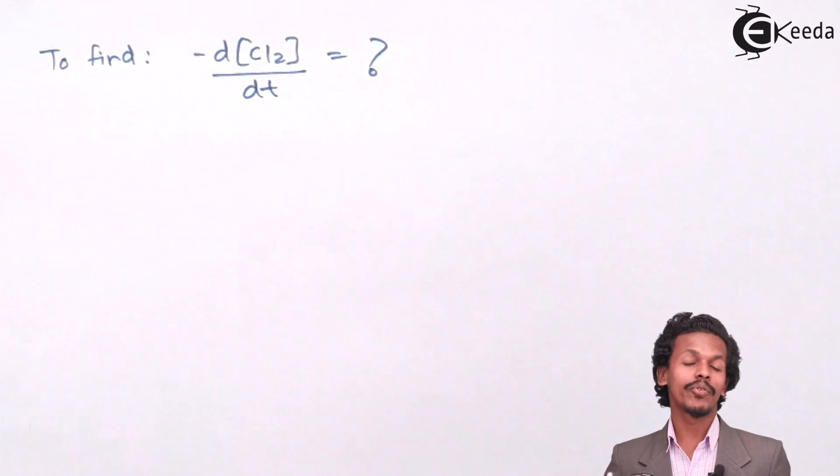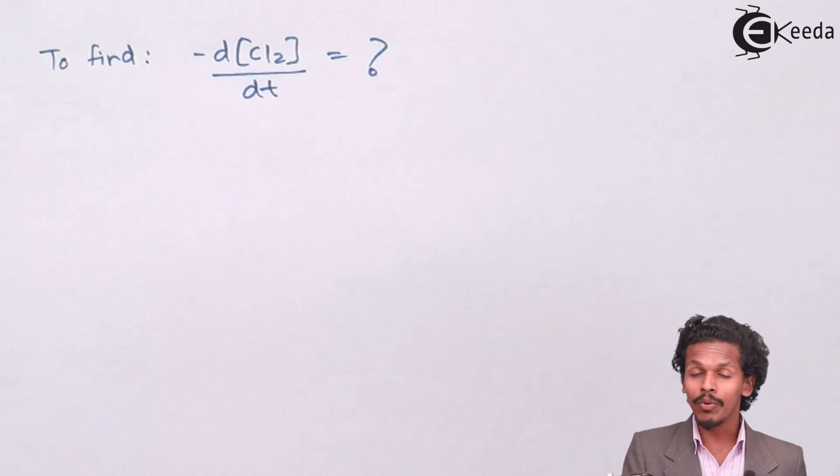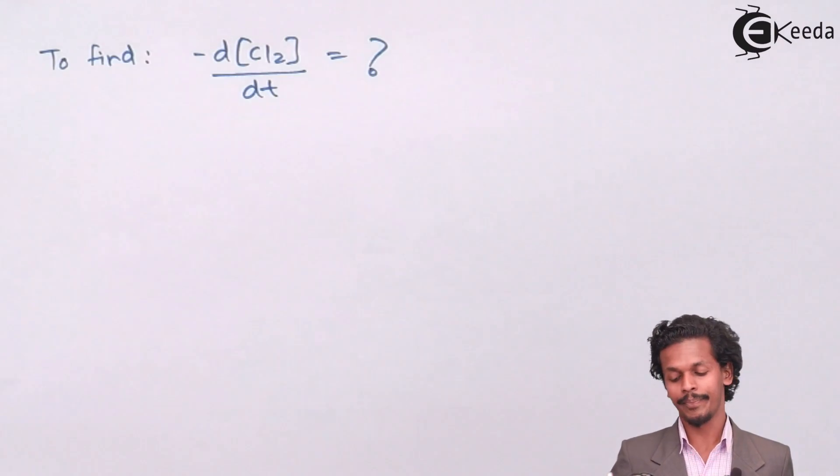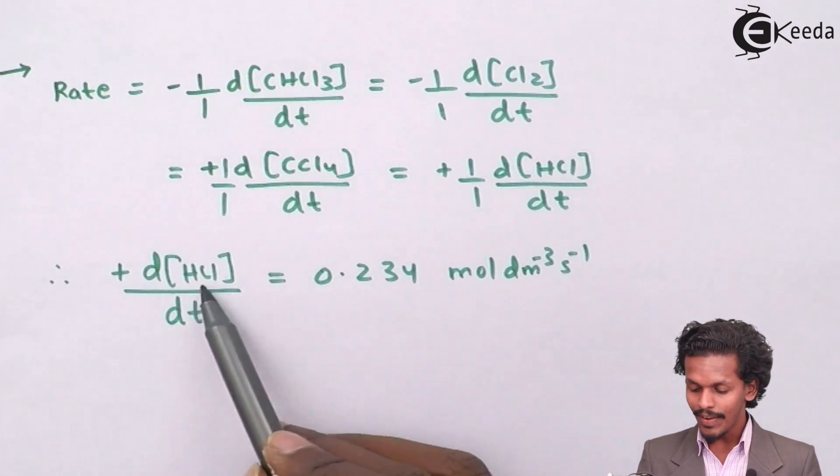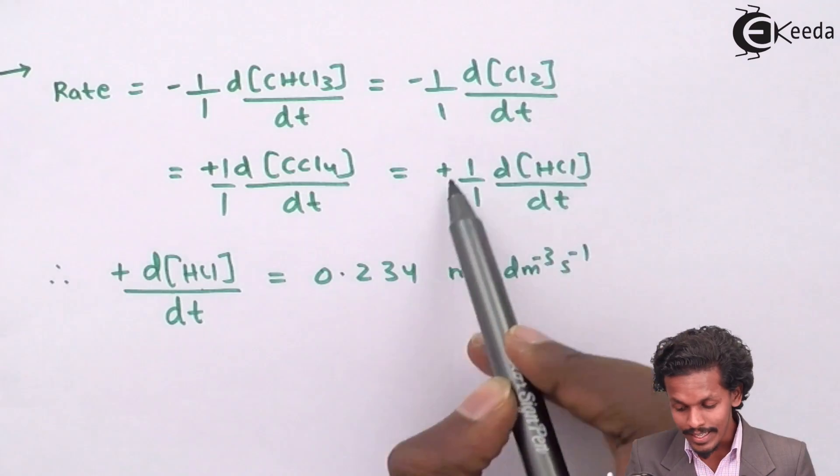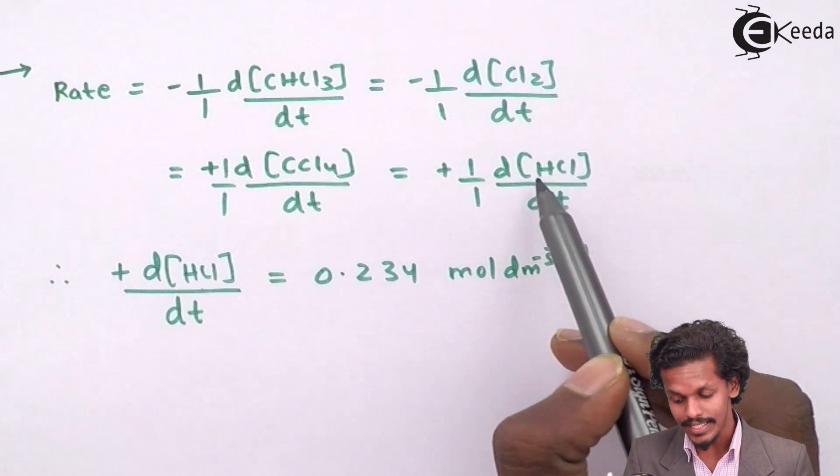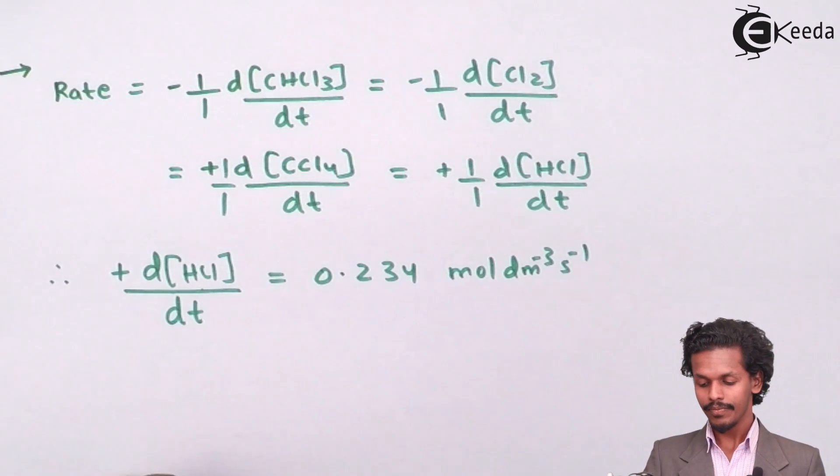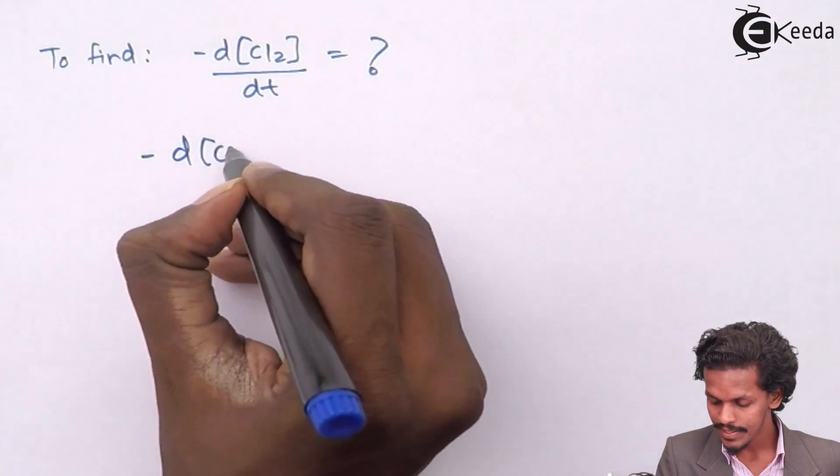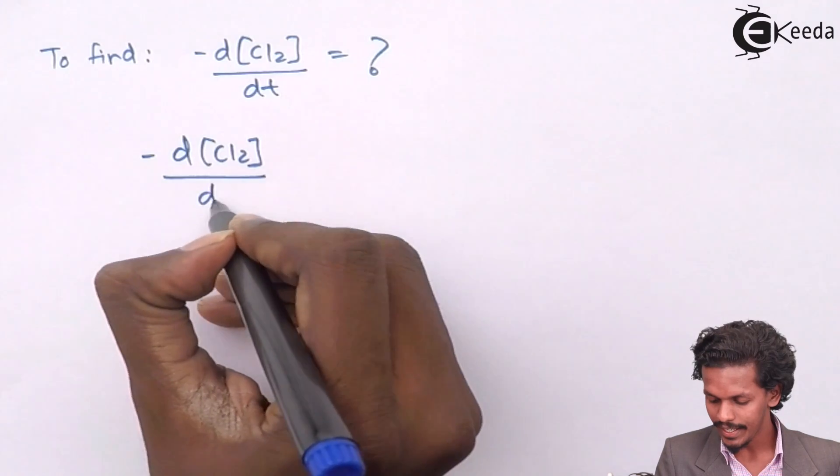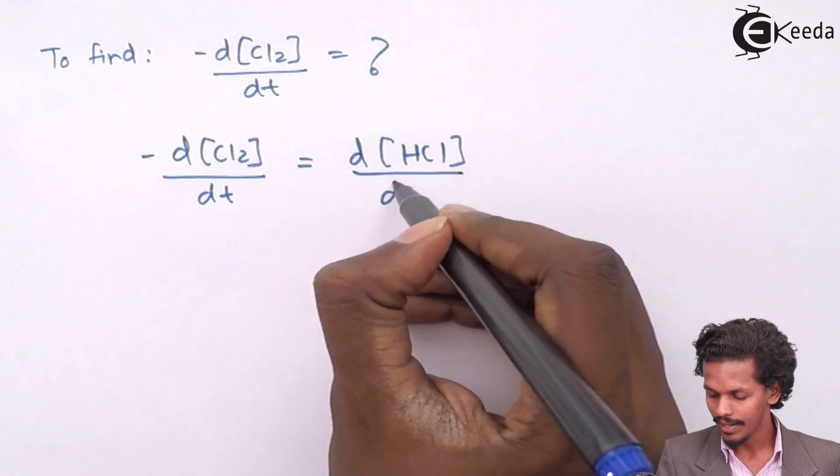Again, suppose to find rate of consumption or rate of degradation or decomposition of Cl2. This is what we have to find. But we will again look at the data that we have calculated or that we have estimated, which is this. The HCl value is given to us. The HCl value is given to us and we will always equate this value with the requirement. We will always equate this HCl with the Cl2 right now.